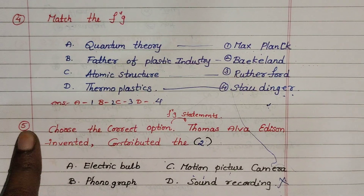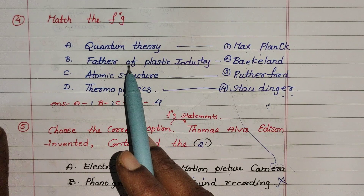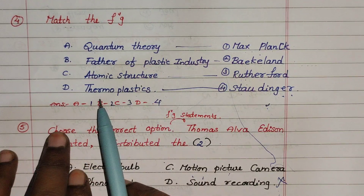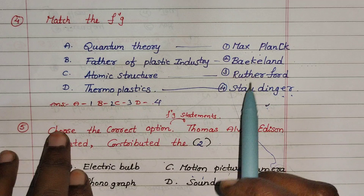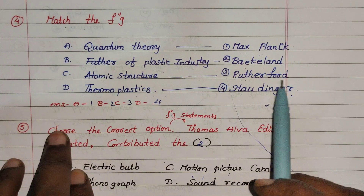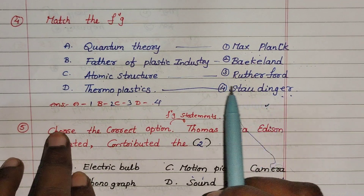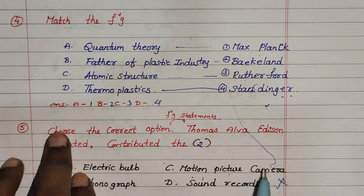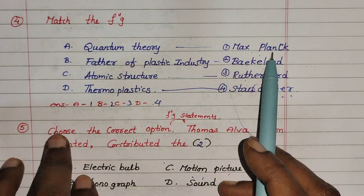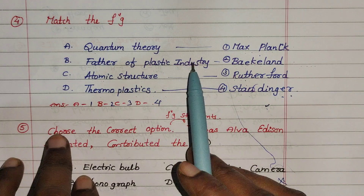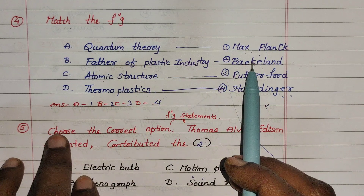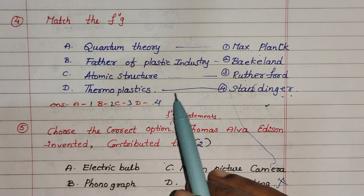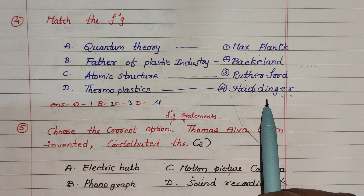The correct option for frequency is Hertz — option B. Next, 4th one: Quantum Theory — Father of Plastic Industry. Thermo Plastics — Max Planck, Beckland, Rutherford, Schrödinger. Actually, Schrödinger — Thermo Plastics and Schrödinger.